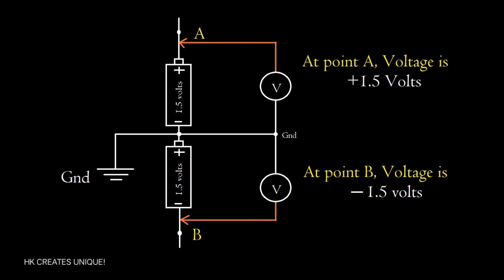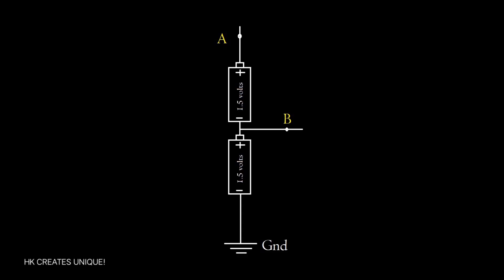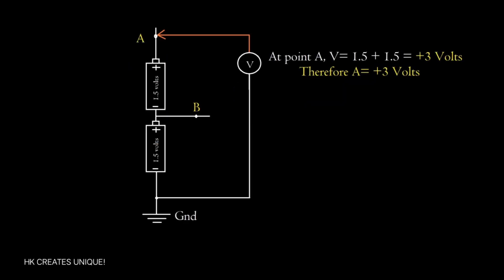This time in the diagram, let ground terminal be this. What will be the voltage at point A and B? When cells are connected in series, each cell voltages are added up. Therefore at point A voltage is plus 3 volts and at point B voltage is plus 1.5 volts.